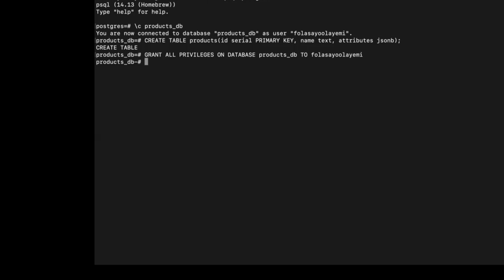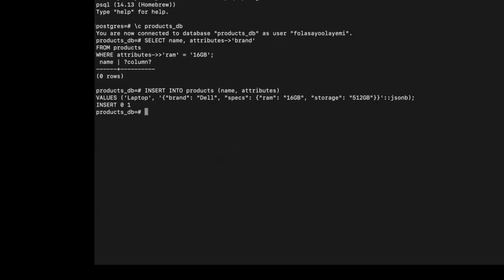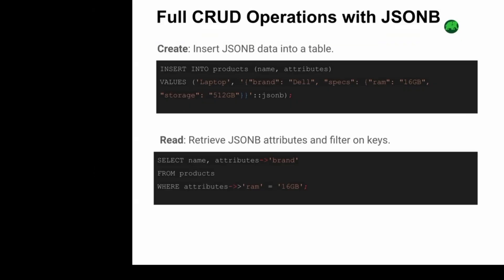Permissions have been granted successfully. Let's quickly run through the full CRUD operations with JSONB. We'll insert JSONB into a table, then retrieve JSONB attributes and filter on keys. We've already inserted JSONB into our table, so let us retrieve JSONB attributes and filter on keys.